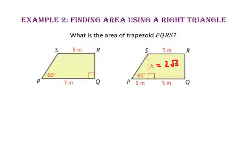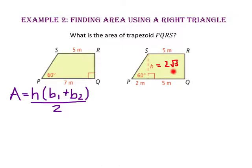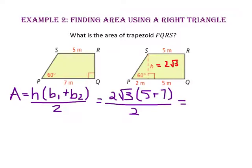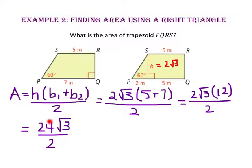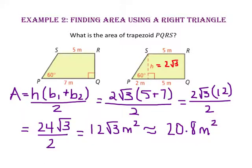Beginning with the formula for the area of the trapezoid — half the height times the sum of the bases — we substitute 2 radical 3 for the height, and 5 and 7 for the bases. 5 plus 7 is 12, so we have 2 radical 3 times 12 divided by 2. 2 times 12 is 24, giving us 24 radical 3 divided by 2. 24 divided by 2 is 12, so the area is 12 radical 3 meters squared, which is approximately 20.8 meters squared. Since the question doesn't specify how to give the answer, either form is fine.